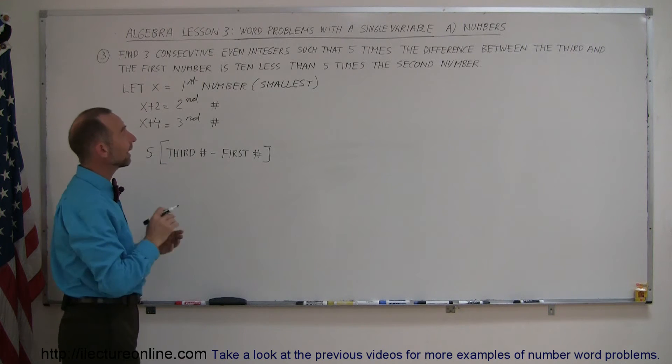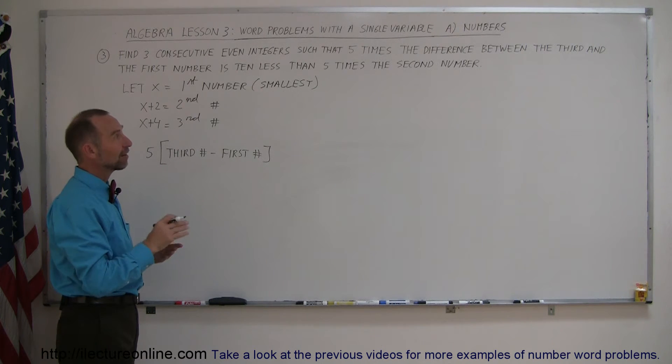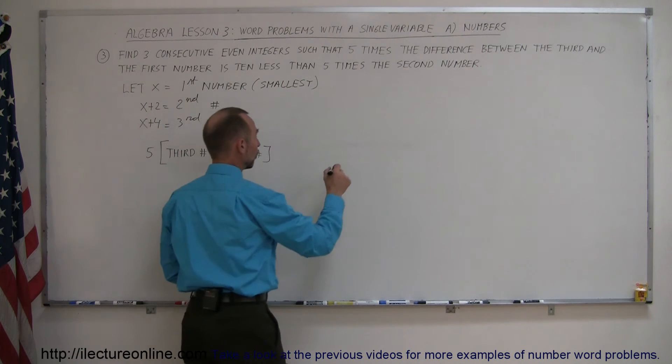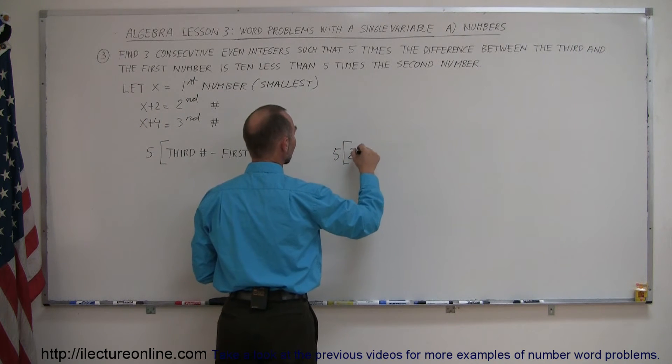And that should be 10 less than 5 times the second number. So here we have 5 times the second number.